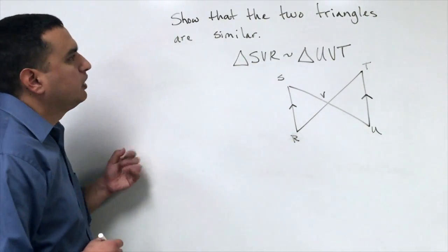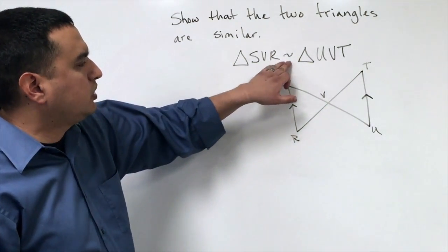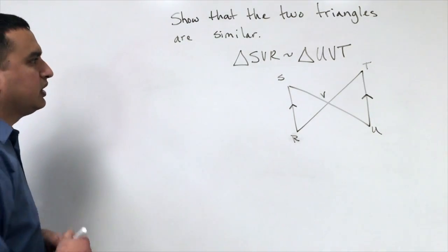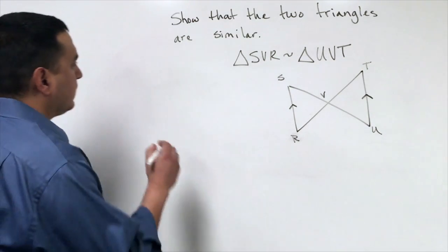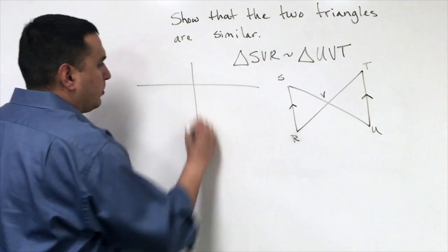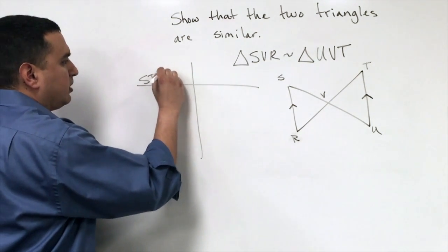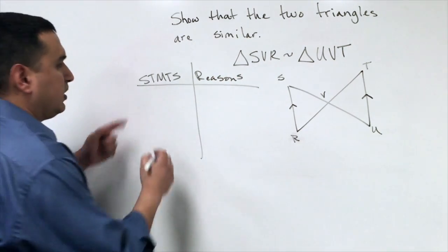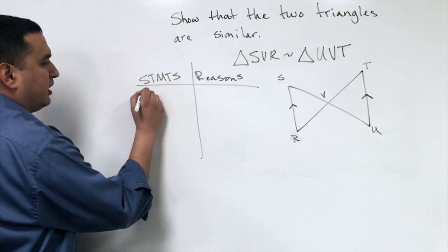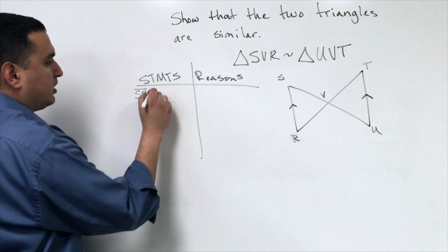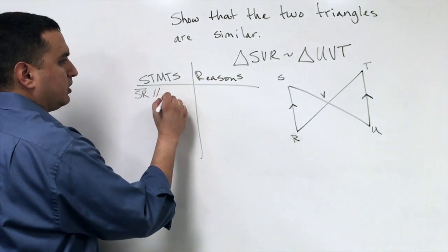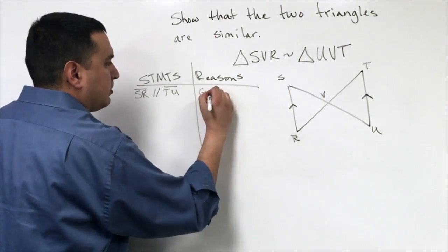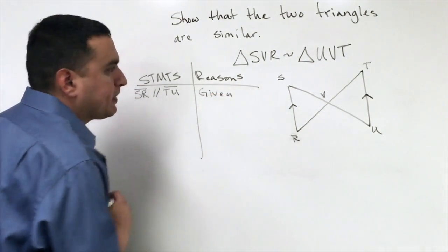On this example, same idea, triangle SVR is similar to triangle UVT. The question is how. We want to show that. For this one, I'm going to kind of do it more like a formal proof. We'll go ahead and put our little statement and reasoning columns. So I know that's given is SR is going to be parallel to TU. That's what those little arrows mean, that's given.